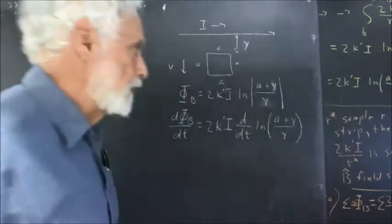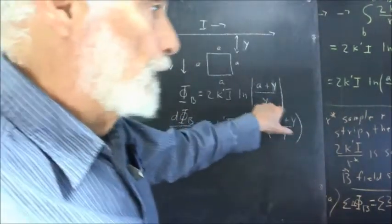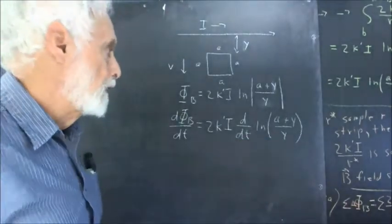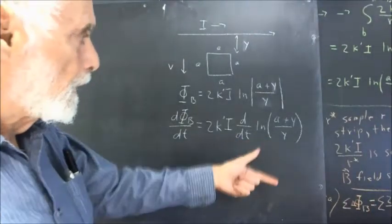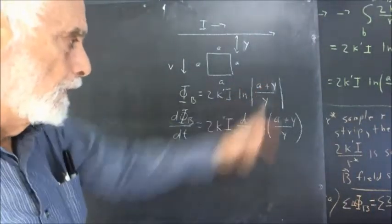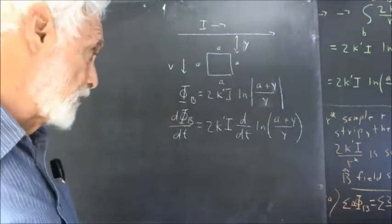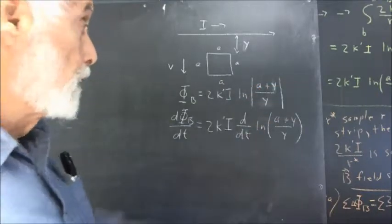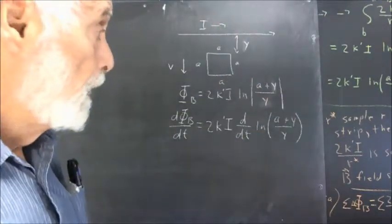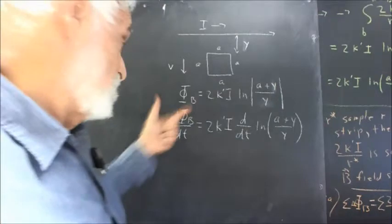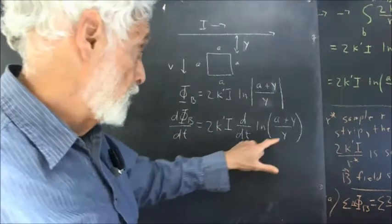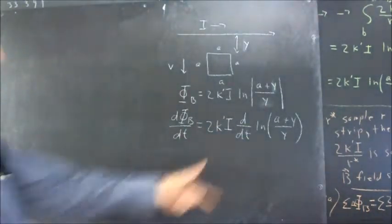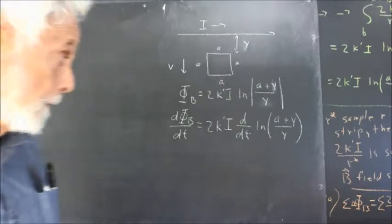You'll notice I used absolute values here but not over here. All these quantities are positive, so the absolute value really wasn't necessary. I wrote it here out of habit and didn't bother to change it. But I've gone back to parentheses here, so we don't have to worry about the absolute value.